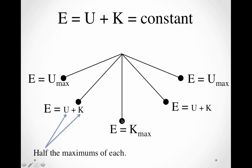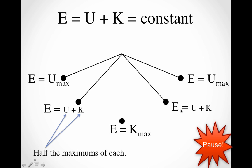When it gets down to the bottom, it's going the fastest, and that's where it has maximum kinetic energy. Then, when it climbs up the other side and you're halfway vertically up, you have half and half. When you get to the other side, all of the energy is potential again at maximum potential.